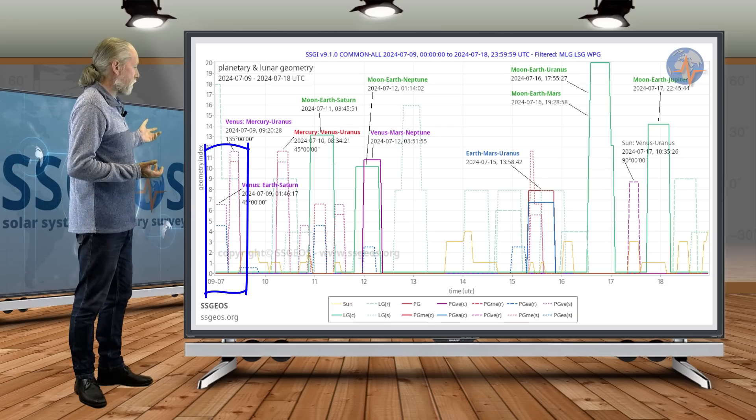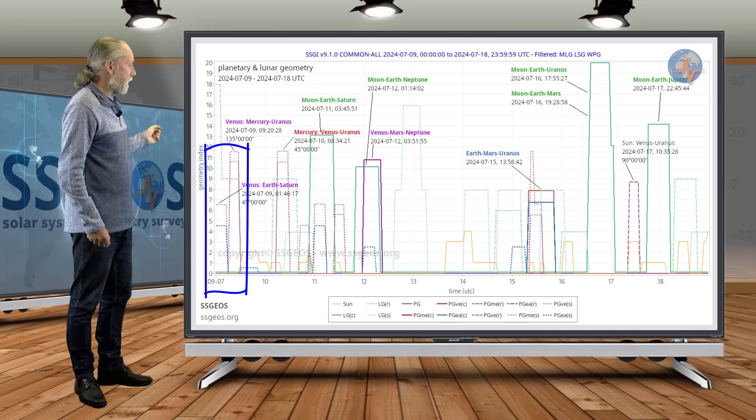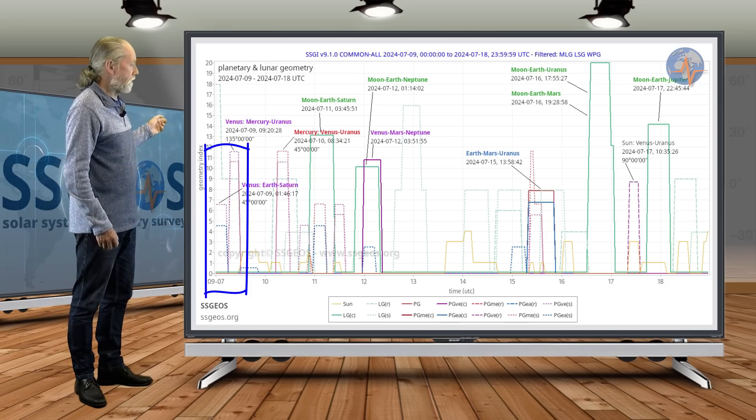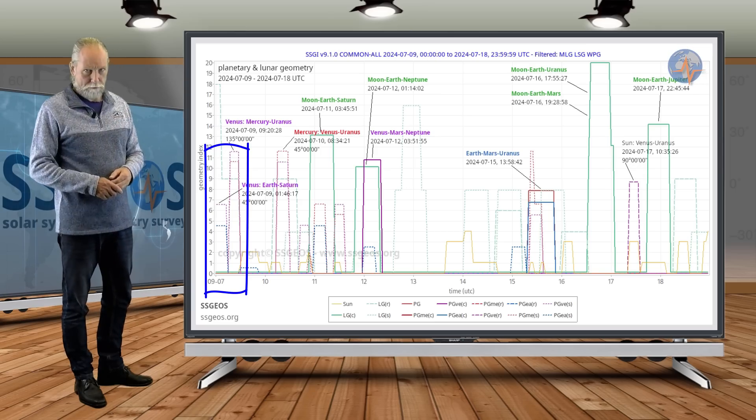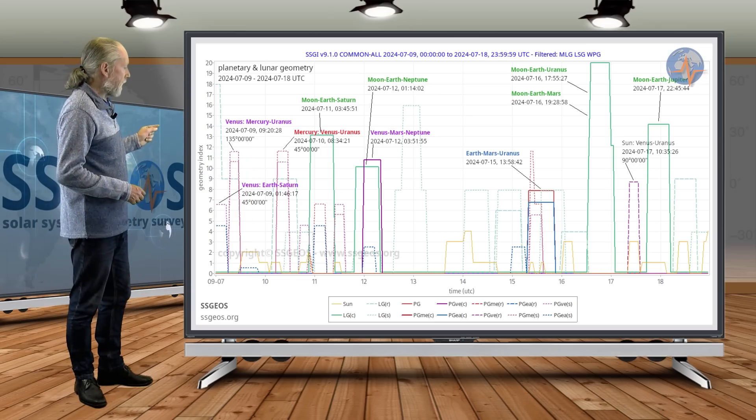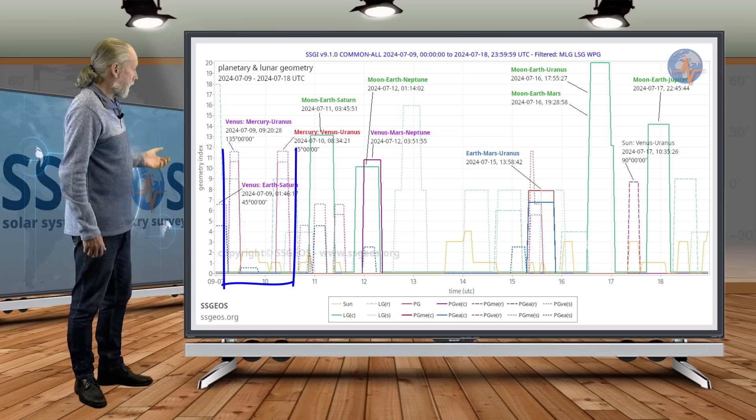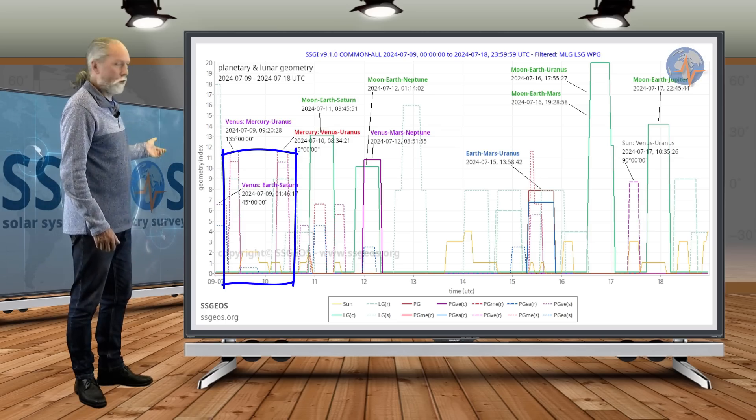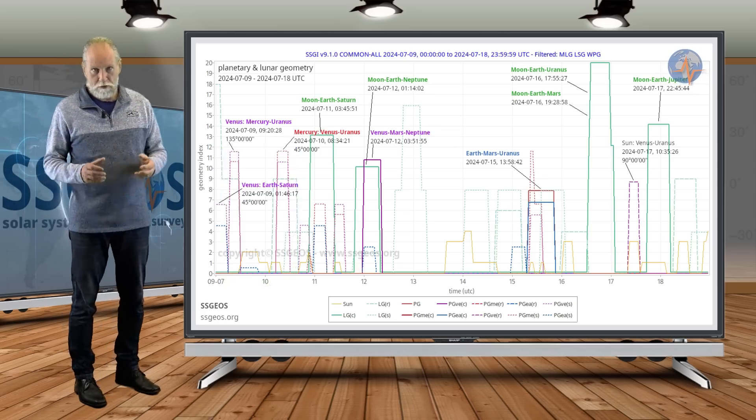And we had the critical one yesterday morning, that was Venus at 135 degrees with Mercury and Uranus. And as followed, it usually comes in pairs, and we see this morning Mercury at 45 degrees with Venus and Uranus.